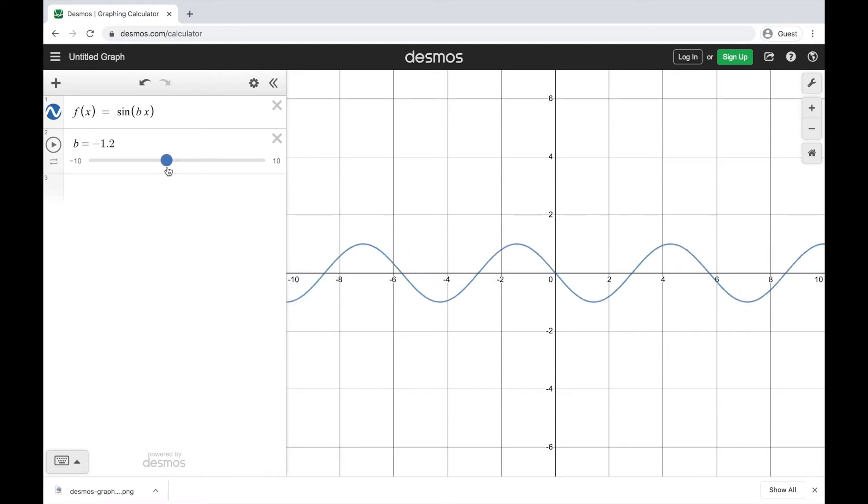If I were to flip this in the negative direction, it flips this graph around the y-axis rather than the x-axis. So moving it between positive and negative will flip the graph around the y-axis.